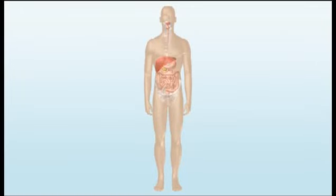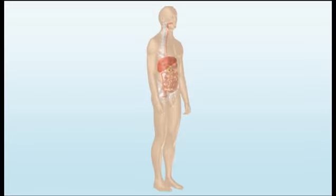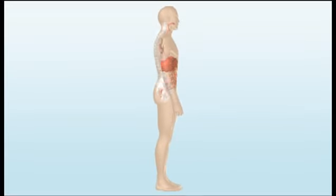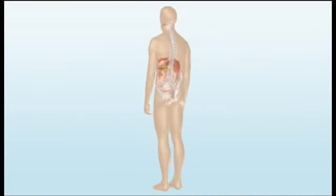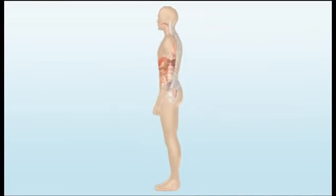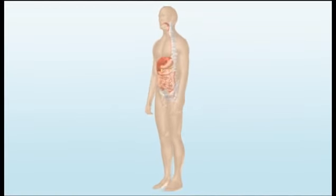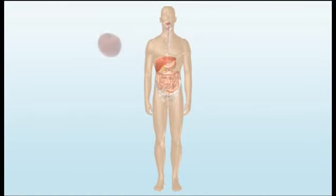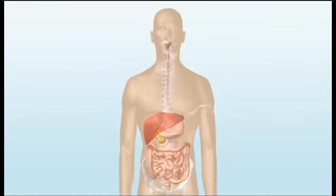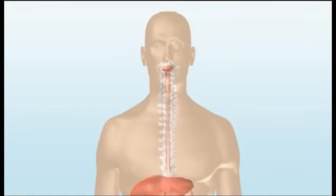Your digestive system consists of all the organs involved in breaking down the food you eat, absorbing nutrients and eliminating waste products. When you take a bite of food, your digestive system is activated automatically.